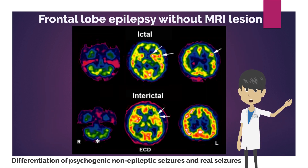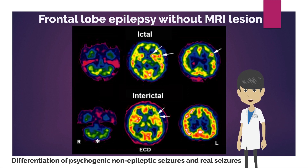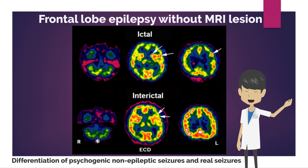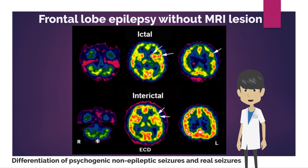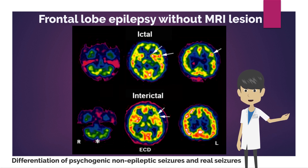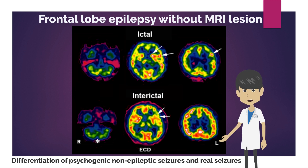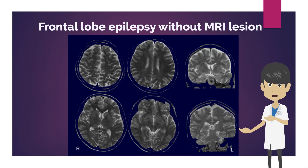Brain perfusion SPECT during interictal and ictal phases was obtained in a patient with frontal lobe epilepsy who did not show any findings on MRI. In this case, coarse motor movements of the arms and legs were observed during seizures, and psychogenic non-epileptic seizures were suspected. During the seizure, there is increased perfusion in the left frontal lobe and left basal ganglia. During the interictal phase, there was a mild decrease in perfusion in the same area, confirming real epileptic seizures.